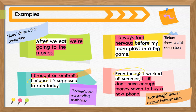In our next example, the two ideas are: I always feel nervous, and my team plays in a big game. These ideas are also related by time with the word before. When do I feel nervous? Before my team plays in a big game. The next example has a conjunction that creates a different kind of relationship. Because is a conjunction that indicates a cause or reason for something. I brought an umbrella. Why? Because it's supposed to rain today. The last example uses even though to show yet another kind of relationship — a contrast. I worked all summer; we expect good things to happen, right? But I still don't have enough money saved to buy a phone. So we have a contrast between a positive idea and a negative idea.